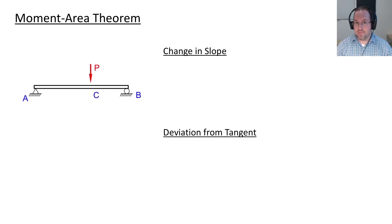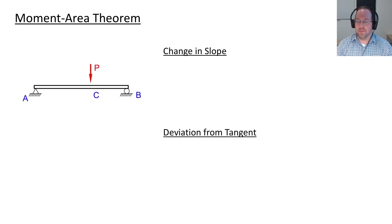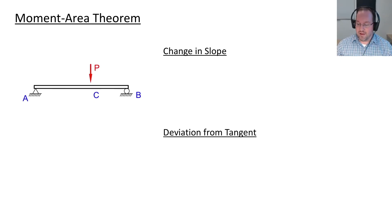The moment area method is based on the fact that the moment is equal to EI times the curvature. The curvature being the second derivative of the displacement, I should be able to find that displacement using double integration. If we don't really want to deal with integration, but we'd rather just deal with areas, we can do that instead.